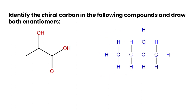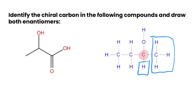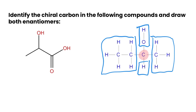Because it's got three hydrogens and only one other different group, that carbon is certainly not chiral — it doesn't fit the definition. The next carbon is attached to one group here, a hydrogen, an ethyl group, and a hydroxyl group. Those are four different things: a methyl, an ethyl, a hydroxyl, and a hydrogen. So this carbon is chiral.